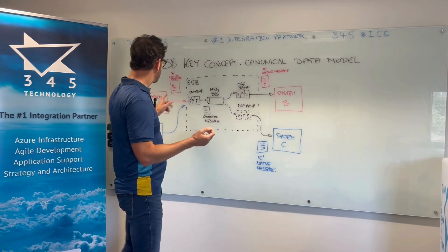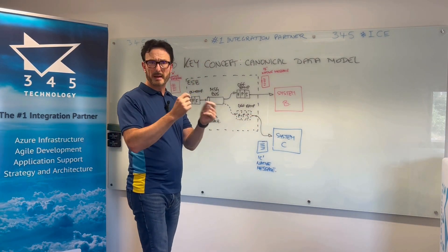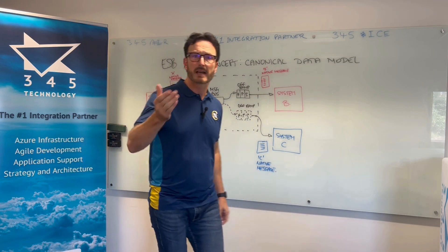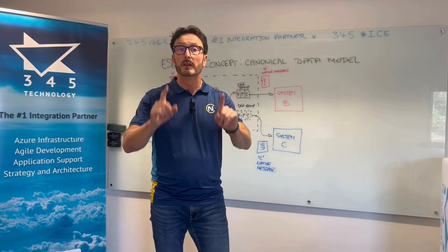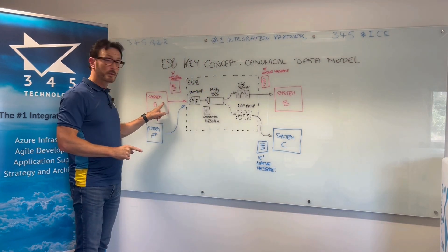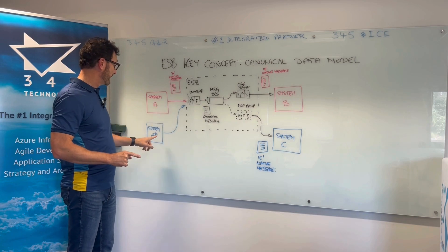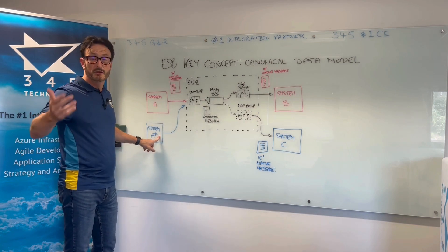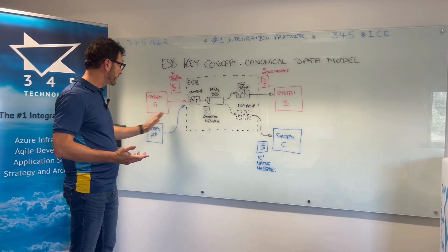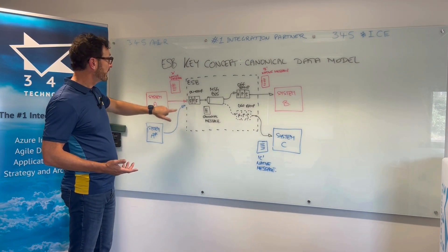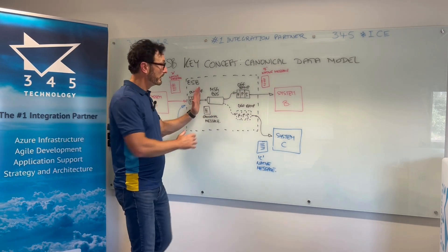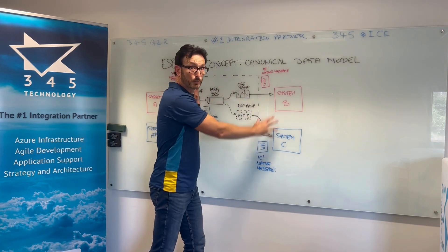Now if I was to go straight from A to B, I'd just need to map from A to B, and I've done this extra work to map to canonical — does that mean it's a waste of time? No. What happens if I want to swap out System A and maybe get a new piece of software, call it A-star? All I've got to do is map my new system's data format into my canonical, and all of that doesn't change — it's all protected.